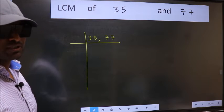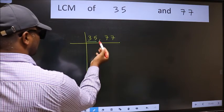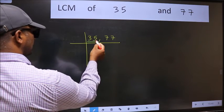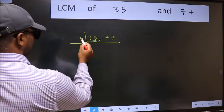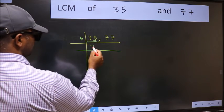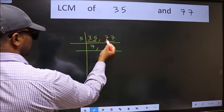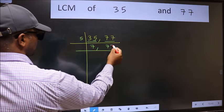Now focus on the first number, 35. The last digit is 5, so take 5. When do we get 35 in the 5 table? 5 times 7 is 35. The other number 77 is not divisible by 5, so write it down as it is.